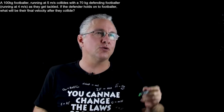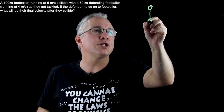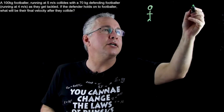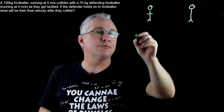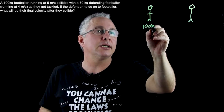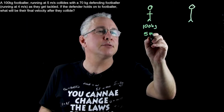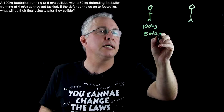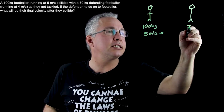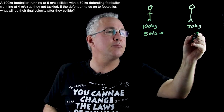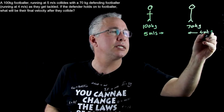So let's quickly draw the situation. Here is my first footballer, here is my second footballer. We know this first footballer is 100 kilograms and they're moving at 5 meters per second in that direction. The other footballer is 70 kilograms and they're moving in the opposite direction at 4 meters per second.